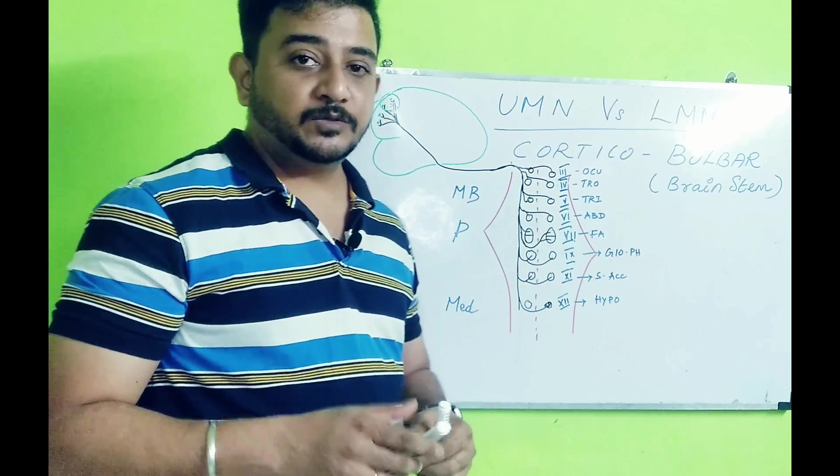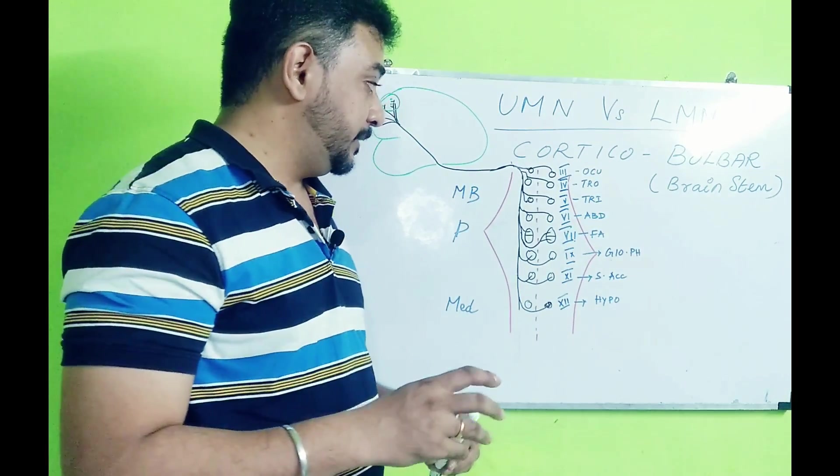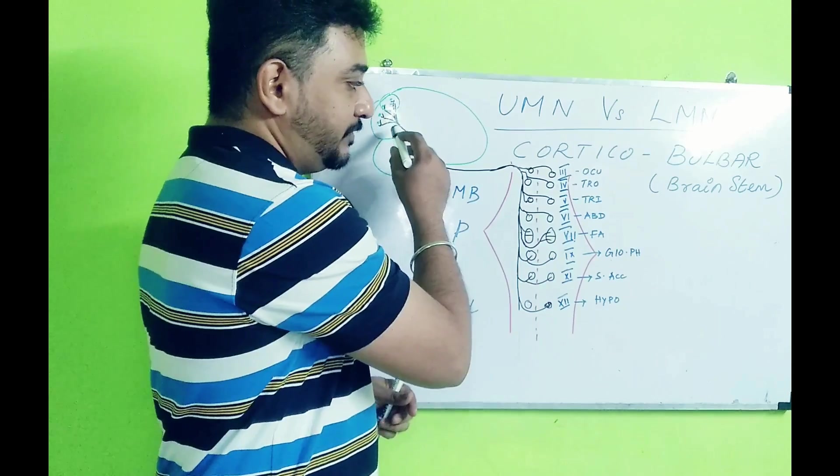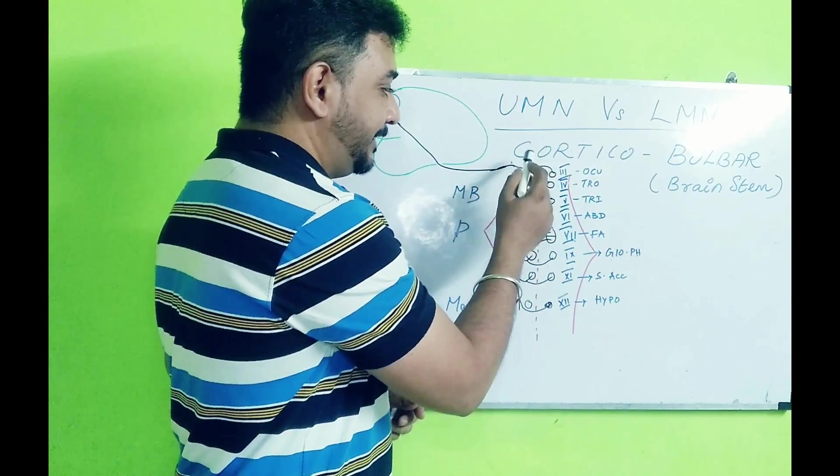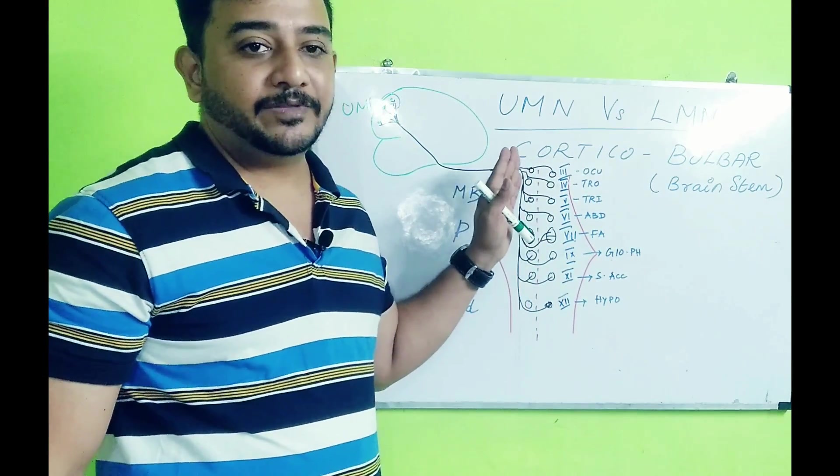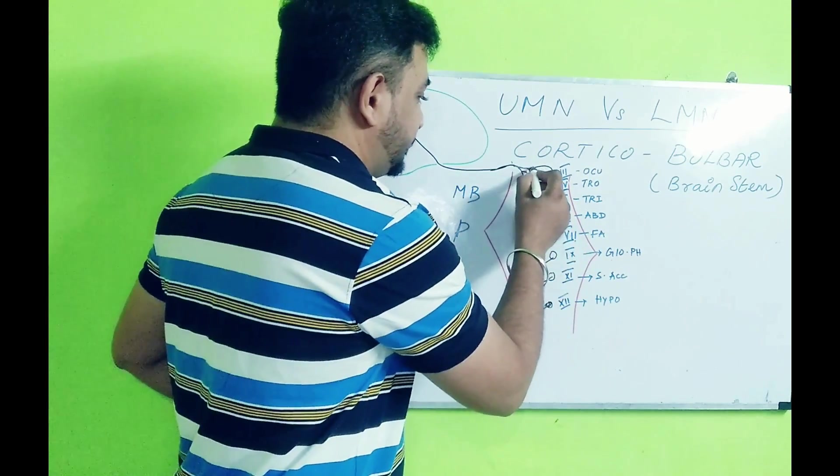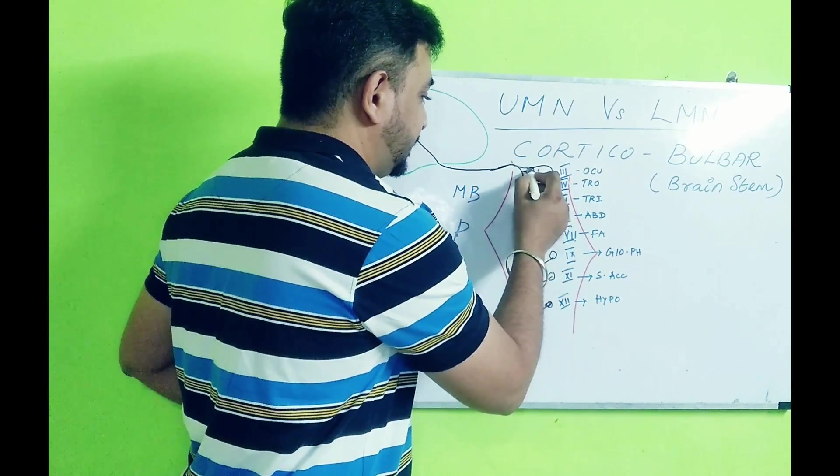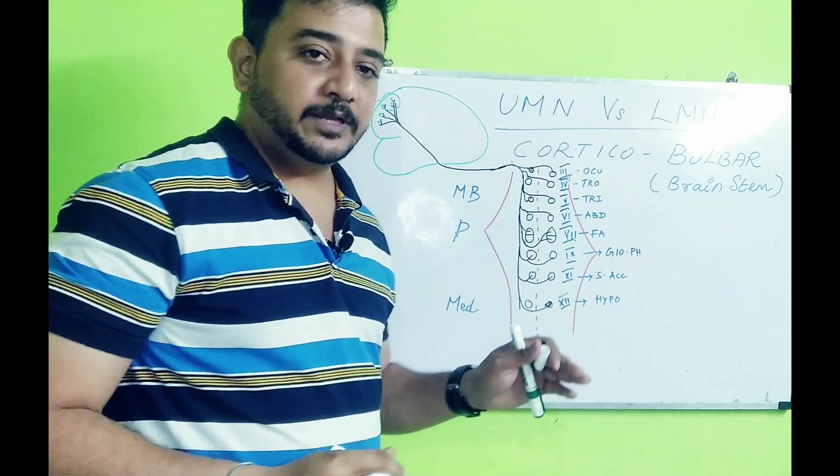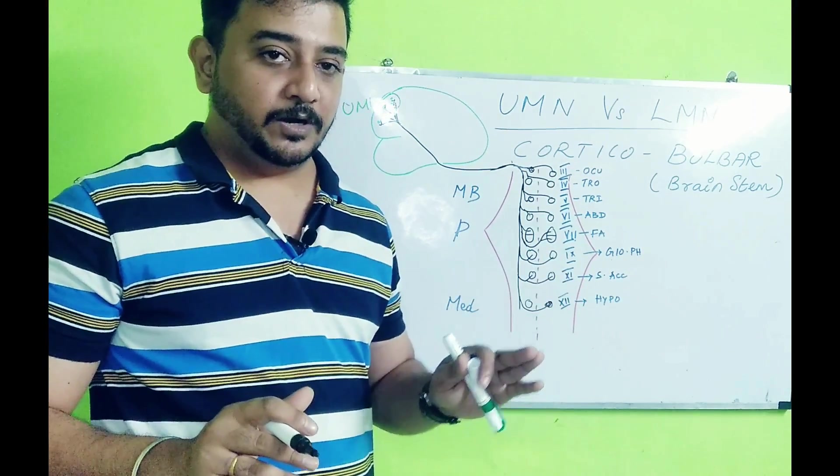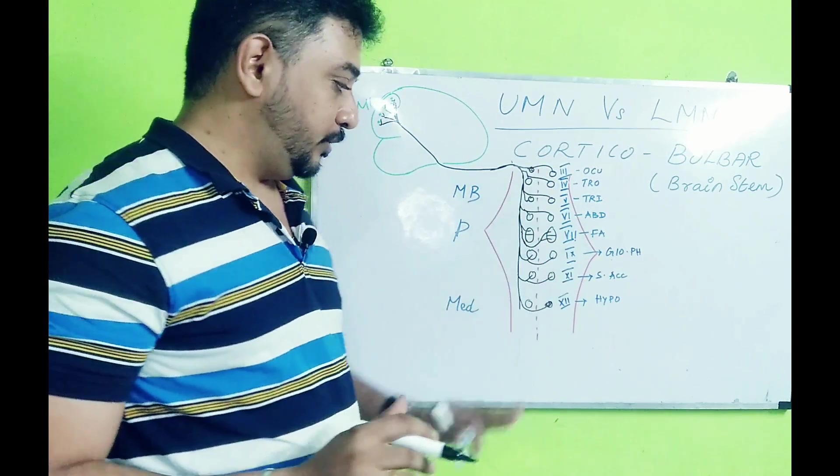Now the information from the upper motor neuron is relayed into the nucleus of the respective cranial nerves, and from here a twig arises. All the cells here are similar to the anterior horn cells of the spinal cord and they are the lower motor neurons.